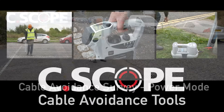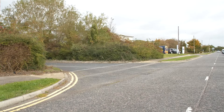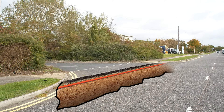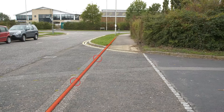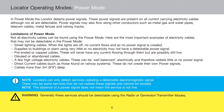Theory of the power mode: when used in power mode, C-scope cable avoidance tools detect the signal created by electrical alternating current being present on a conductor. These power signals will most often be detected coming from live electricity cables, but they may also be present on other conductors such as metal gas and water pipes, telecom cables, and even railway tracks.